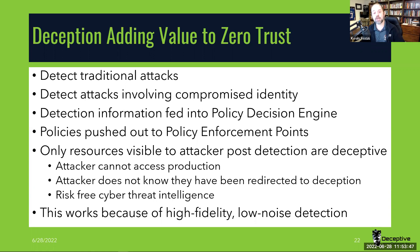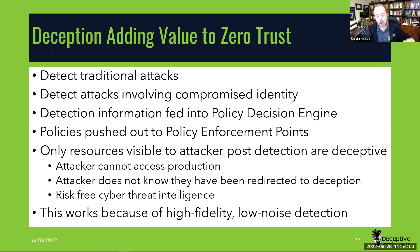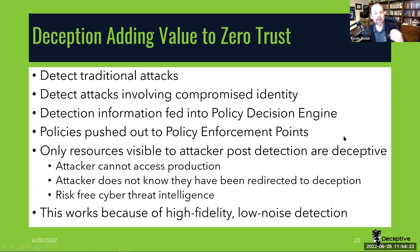The only thing left available is for the attackers to interact with deceptive resources. Now we have a full environment we can watch the attacker in all day long. The attacker cannot break out because they've been prohibited from doing so via the zero trust architecture. The reason this works well: you don't want to make giant policy enforcement decisions based on inaccurate detection. But because deception provides high-fidelity, low-noise detection, when the attacker interacts with a deceptive resource, that IP address is handed to the policy decision engine and policies are pushed out to enforcement points.